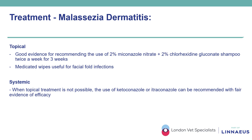Treatment of Malassezia dermatitis is available both as topical and systemic medications. Topical medications are the only ones officially licensed in the UK, and there is good evidence for recommending the use of 2% miconazole nitrate and 2% chlorhexidine gluconate shampoo twice a week for three weeks. Medicated wipes can additionally be useful for facial skin infections, though shampoo should be used as the first line. When topical treatment is not possible, the use of ketoconazole or itraconazole can be recommended with fair evidence of efficacy.